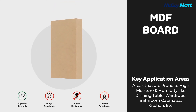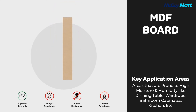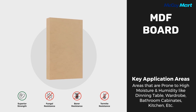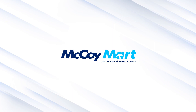Last, we have MDF board. These are used in areas prone to high moisture and humidity, like dining tables, wardrobes, bathroom cabinets, kitchens, etc. It is of superior strength and is also fungal resistant, water resistant, and termite resistant.